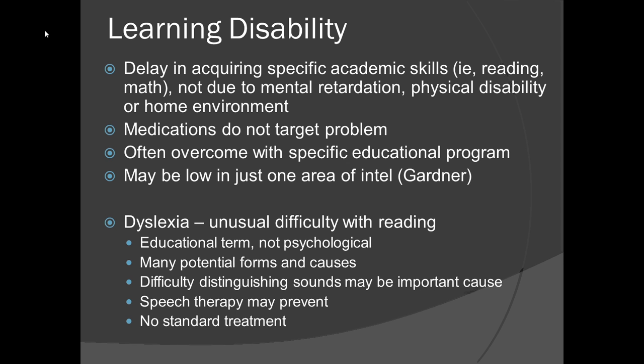A more common cause of dyslexia is difficulty distinguishing sounds from one another. Often, an indicator of this is a speech impediment — the child unable to distinguish sounds also fails to differentiate them in speech. If this is the case, speech therapy may prevent dyslexia if started soon enough, or help a child who already has difficulty reading. Since causes vary, there is no standard treatment — to treat dyslexia, the cause must first be determined.